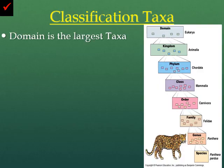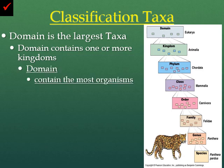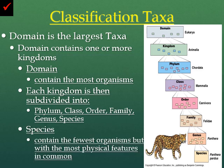The classification taxa: Domain, the top of the funnel, is the largest taxonomic category containing the most organisms. The domain will then contain one or more kingdoms. Each kingdom is then subdivided into phylum, class, order, family, genus, and species. The further down you go, the more specific you get until you are looking at one specific species of organism. The species — the most specific, the bottom of the funnel — contains the fewest organisms but has the most in common for physical features of the organism.